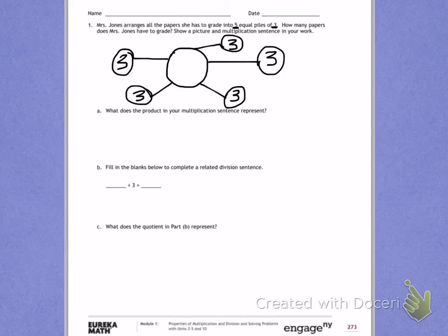When I look at this, I see that I have 5 groups. In each of those groups, I have 3. 3, 6, 9, 12, 15, giving me a total of 15. I drew my picture and my multiplication sentence.